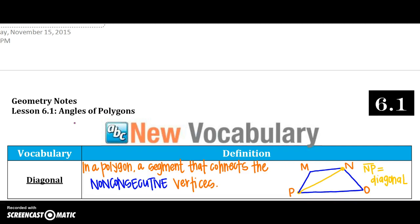We'll get started into our new vocabulary, which is a diagonal, and it is in a polygon, a segment that connects the non-consecutive vertices. That non-consecutive kind of means just two that aren't back-to-back. So notice in the diagram, I have a polygon MNOP, and notice that N and P are the non-consecutive vertices. So a segment that connects the two would be called the diagonal.